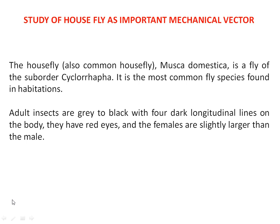The housefly, that is Musca domestica, commonly called the housefly, is a fly of the suborder Cyclorrhapha. It is the most common fly species found in natural habitations. Adult insects are grayish or black with four dark longitudinal lines — this is an important distinguishing feature of the housefly, present on the back side of the body.